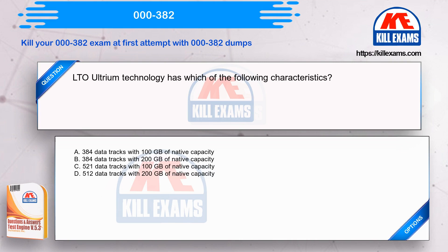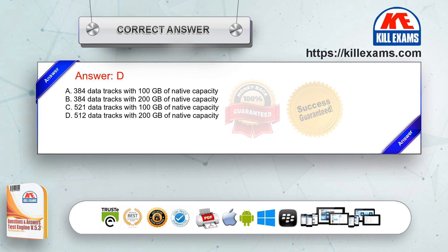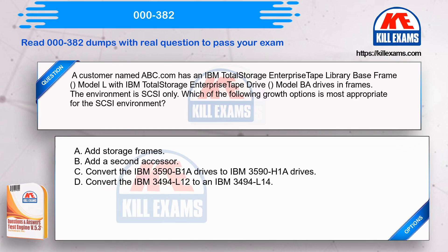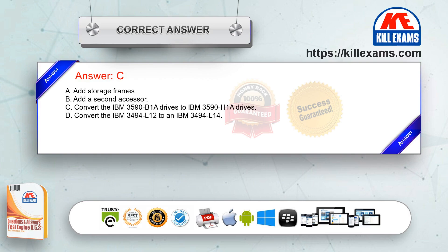Option D - 512 data tracks with 200 gigabytes of native capacity. The correct answer is Option D. A customer named ABC.com has an IBM Total Storage Enterprise Tape Library base frame Model L with IBM Total Storage Enterprise Tape Drive Model BA drives. The environment is SCSI only. Which growth option is most appropriate? Option A - add storage frames; Option B - add a second accessor; Option C - convert IBM 3590 V1A drives to IBM 3590 H1A drives; Option D - convert the IBM 3494 L12 to an IBM 3494 L14. The correct answer is Option C.